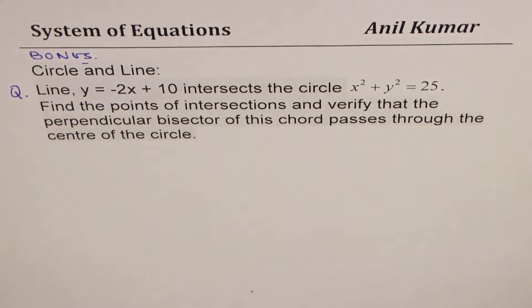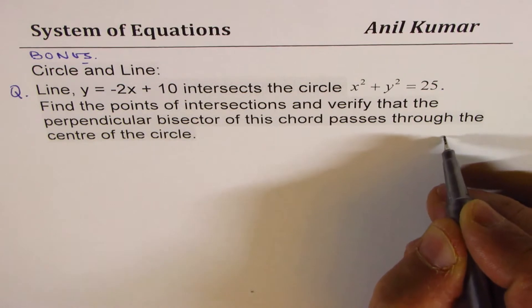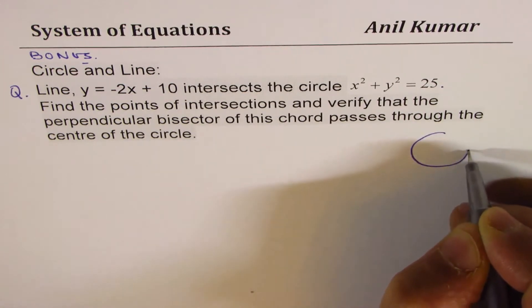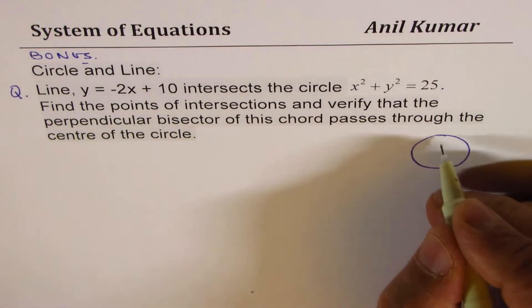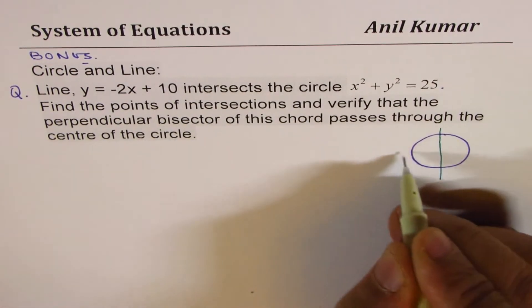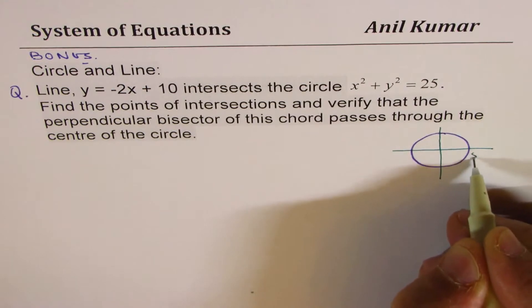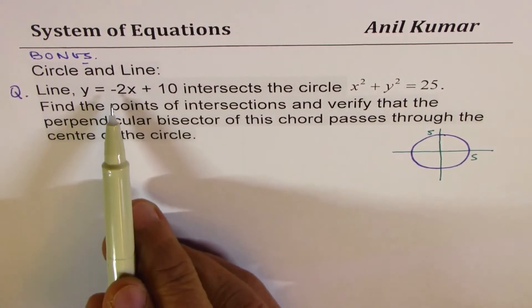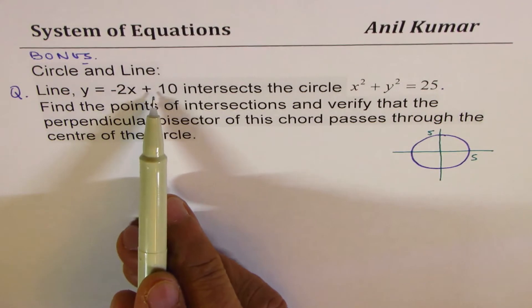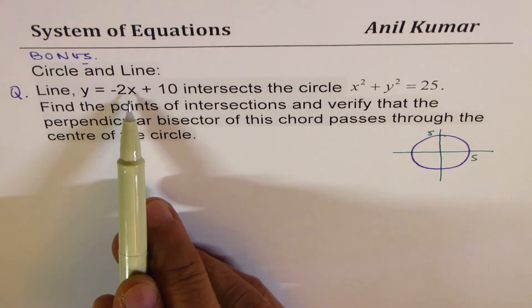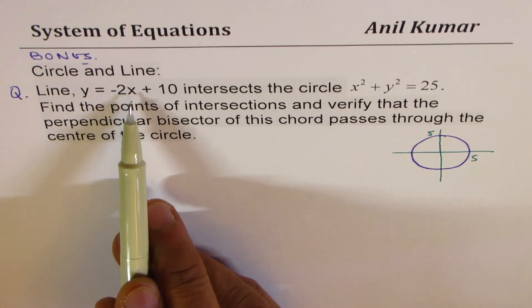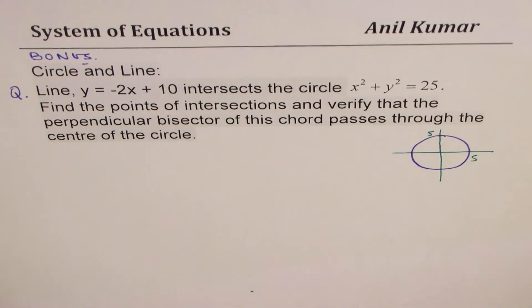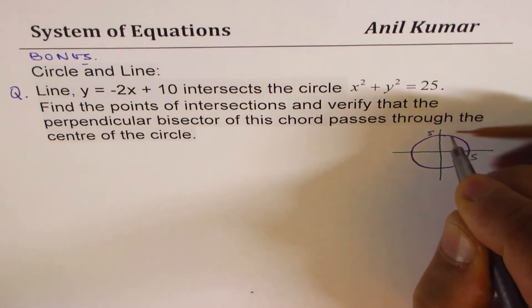Find the points of intersections and verify that the perpendicular bisector of this chord passes through the center of the circle. Let me explain the question first. So let's say this is the circle with center at the origin and radius of 5. The line is minus 2x plus 10. As you can see, it has slope of minus 2, and if I write y equals 0, I get x-intercept at 5. So I could say the line is kind of like this.